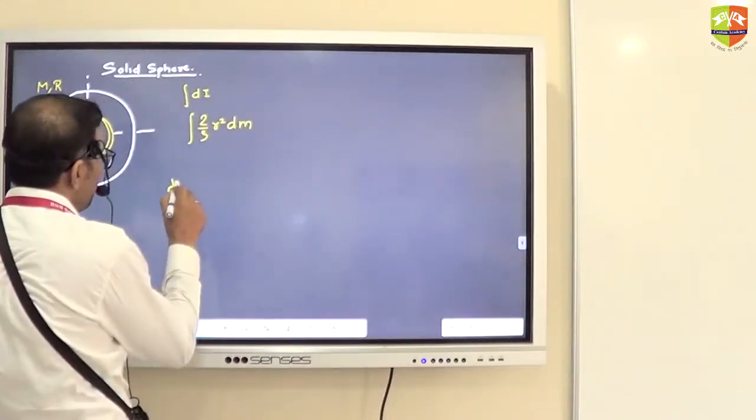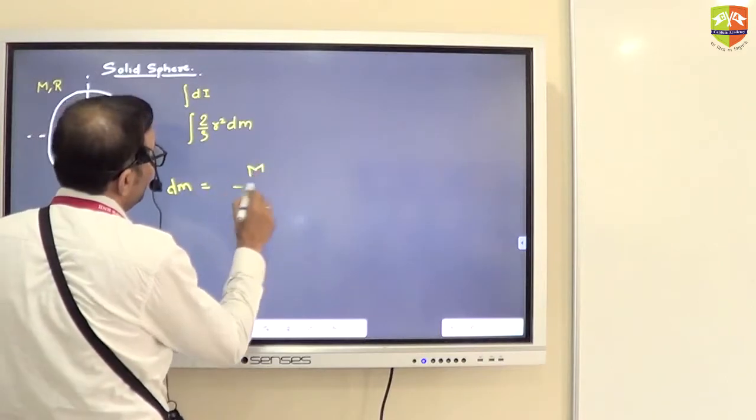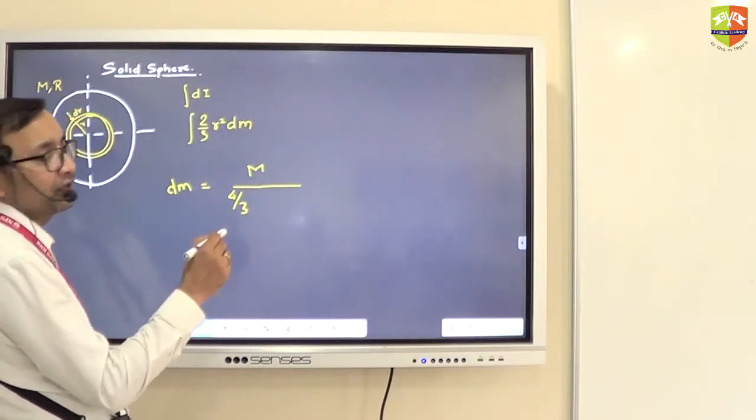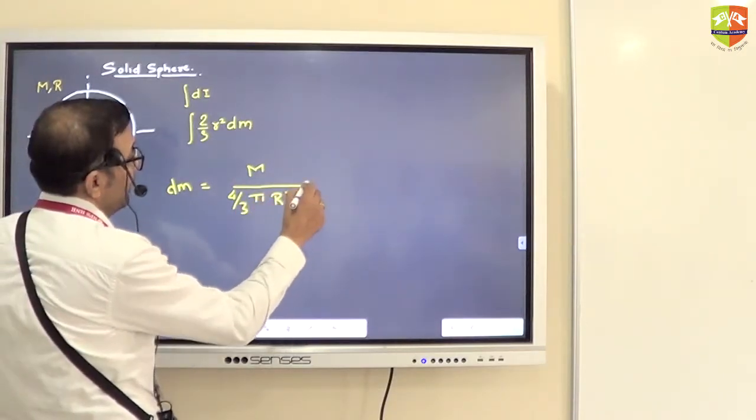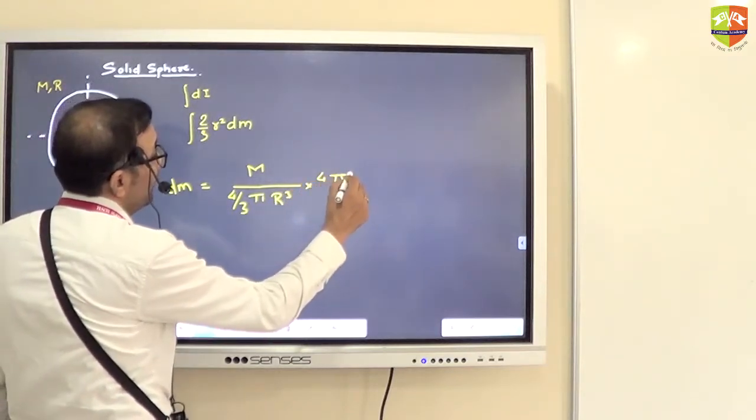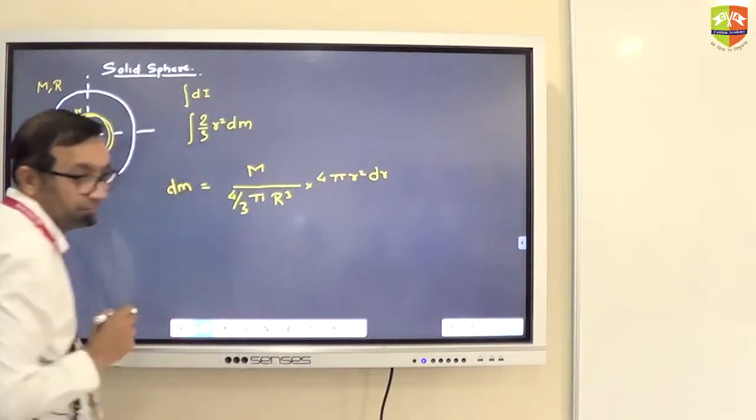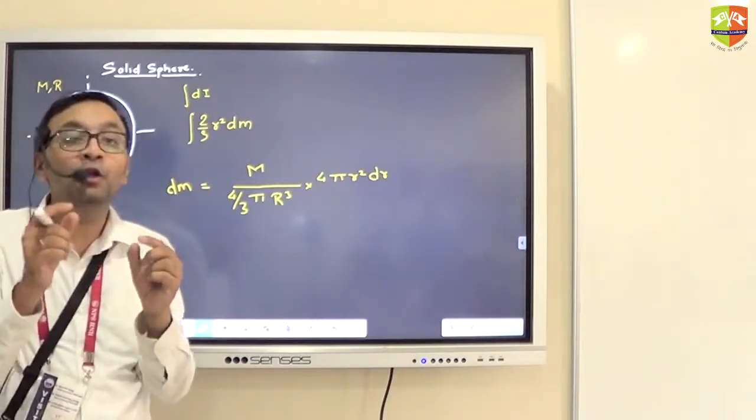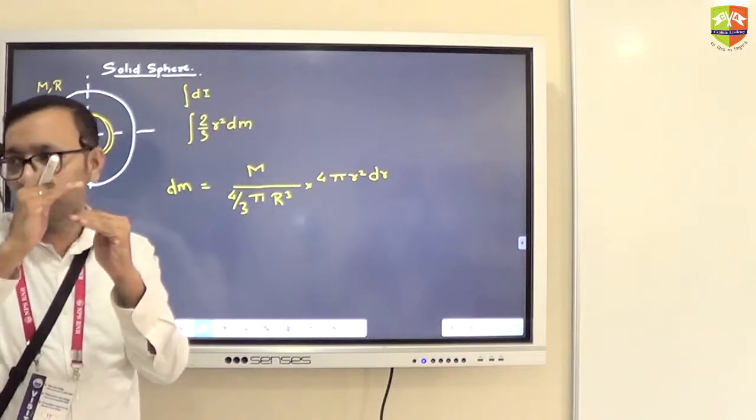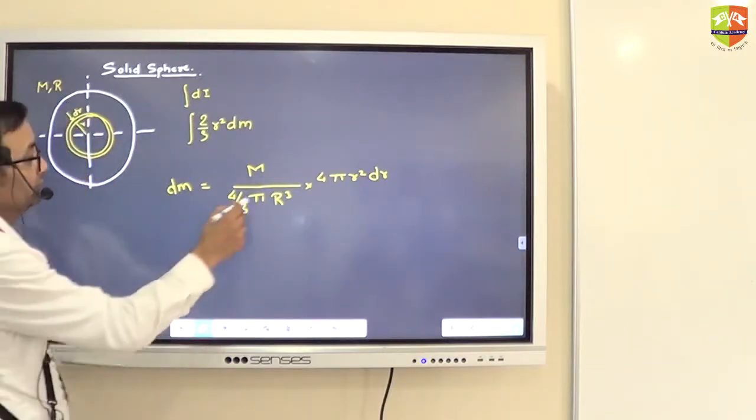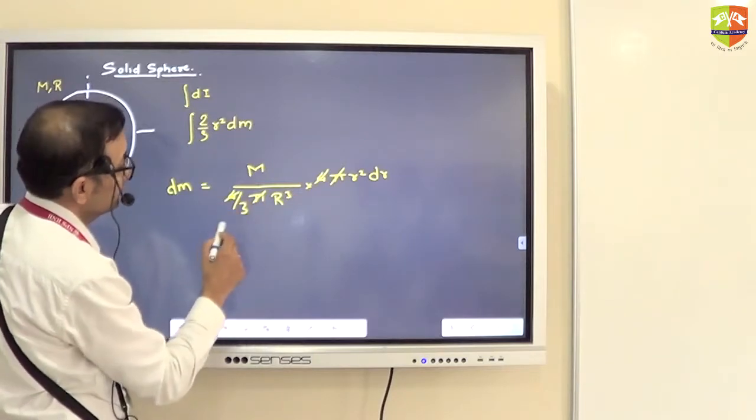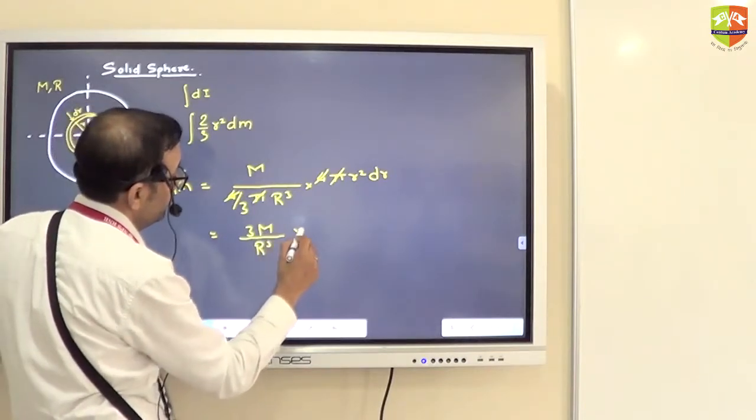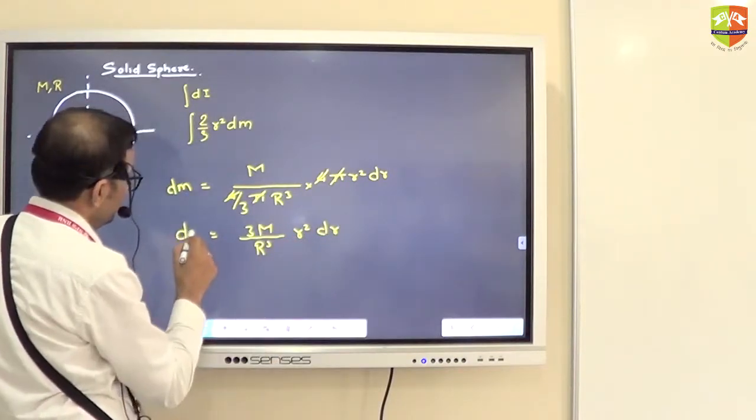What is dm? Mass, total volume is 4 by 3 pi R cubed into what? 4 pi r squared dr. When you are multiplying the volume of dm, you should not take volume inside dm. Volume of dm you have to take, which is surface area into width. Pi in pi goes, 4 goes, 3m by R cube r squared dr. This is my dm.